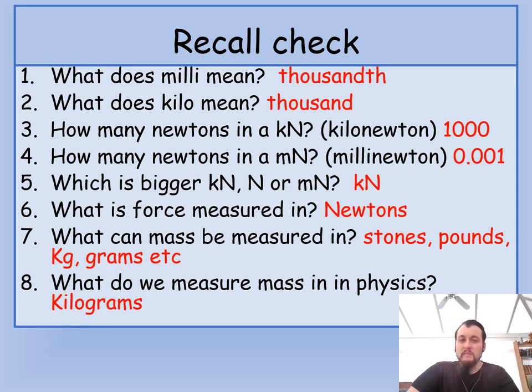Make sure you pause and answer. So milli means 1,000. Kilo means thousand. How many newtons in a kilonewton? There are 1,000. How many newtons in a millinewton? 0.001. Can you see that? It's a thousand to split. And remember that you always put the decimal place after the first zero. It's a really easy way to flip. What's bigger? Obviously a kilonewton. What's force measured in? Newtons. How can mass be measured? Stones, pounds, kilograms, grams. What do you measure mass in in physics? It's kilograms. It will almost always be kilograms.